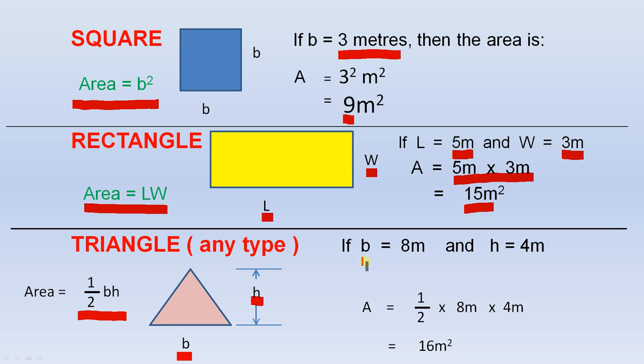In the example, if the base of this triangle is 8 meters and the height of the triangle is 4 meters, we substitute the numbers into the formula and we have area equals half times 8 meters times 4 meters. And if we work that out, 8 fours are 32 and half of 32 is 16. So the area is 16 square meters.